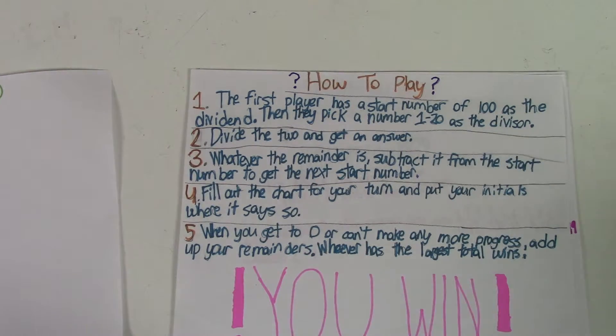The first player has a start number of 100 as the dividend. Then they pick a number 1 through 20 to use as the divisor. Divide the two and get an answer.